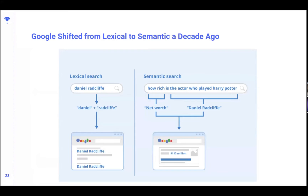Google moved away from purely lexical to semantic search — not entirely, they still use both — but semantic has been layered on since around 2013 with Hummingbird. The key difference: lexical asks 'are the words on the page there to rank for those keywords,' while semantic asks 'is the concept represented on this page, is this meaning present' — and the words don't necessarily have to be there.